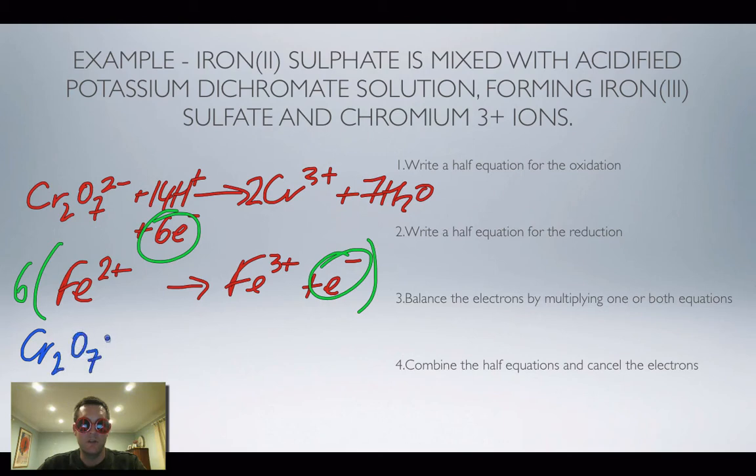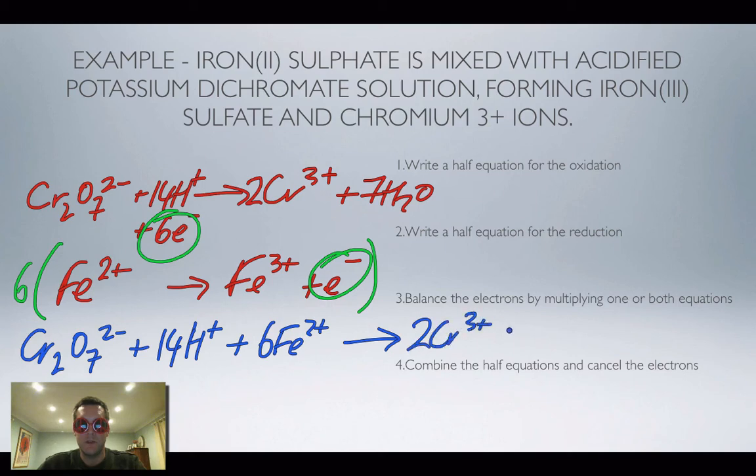I've got Cr2O72 minus and 14H plus from my first equation. Six Fe2 plus in the reactants in my second, and those things are turning into two Cr3 plus and seven H2Os and six Fe3 plus.